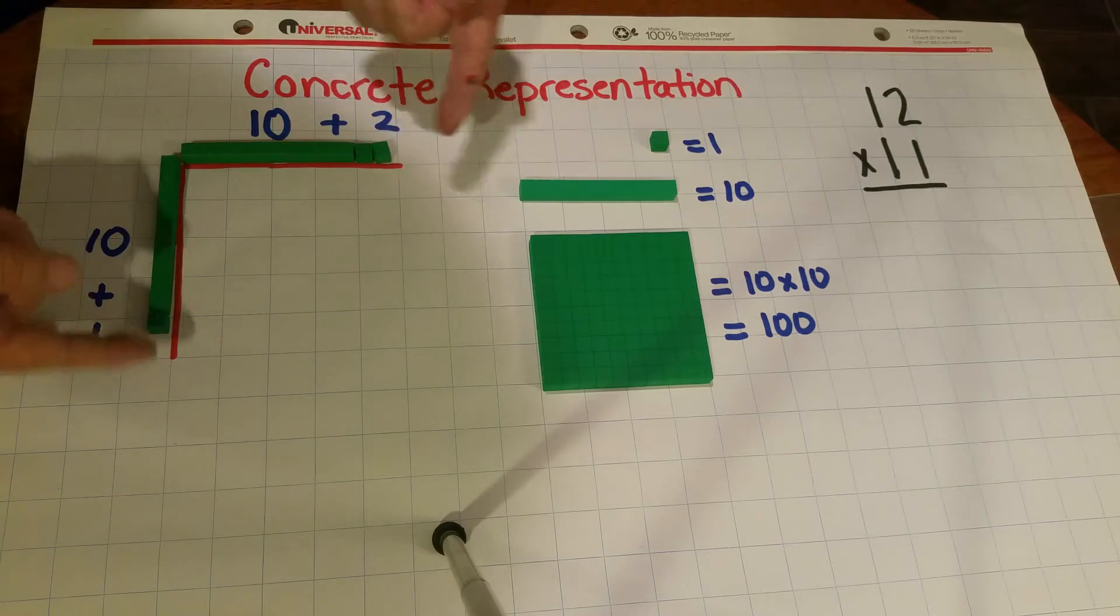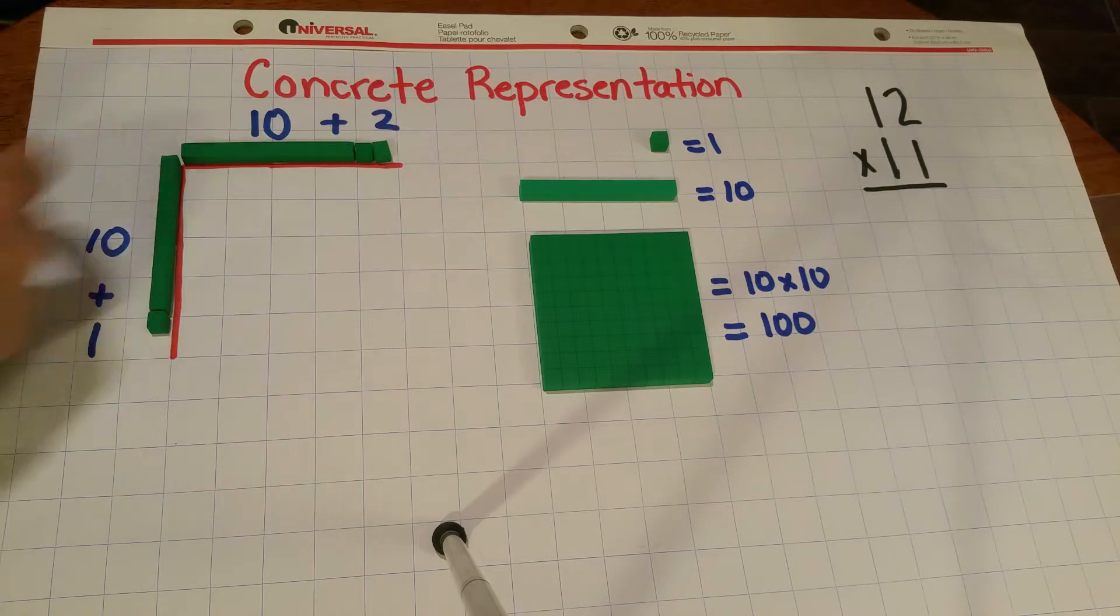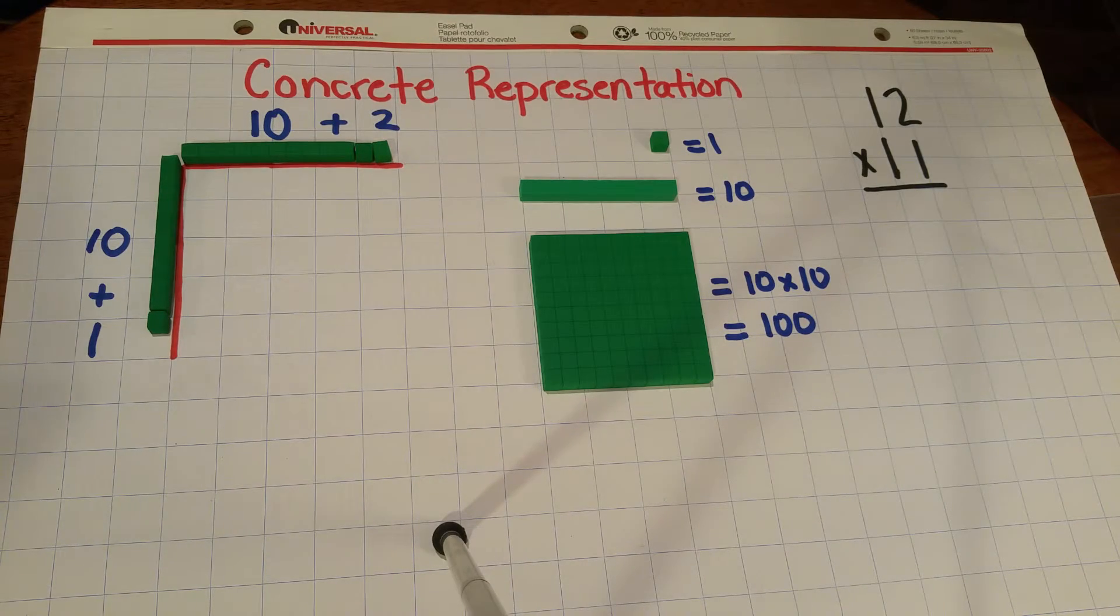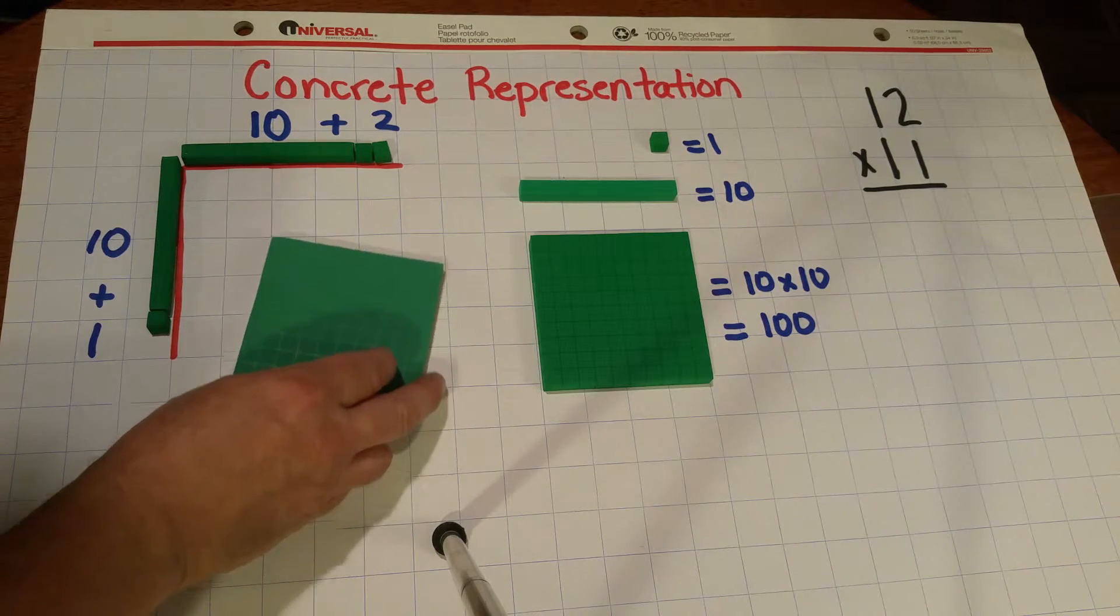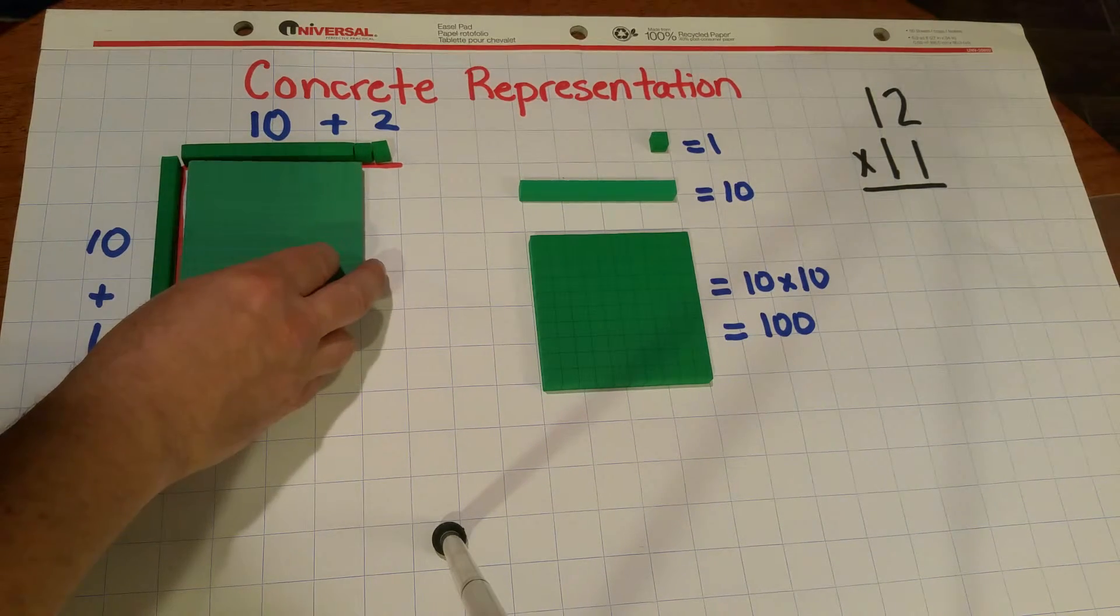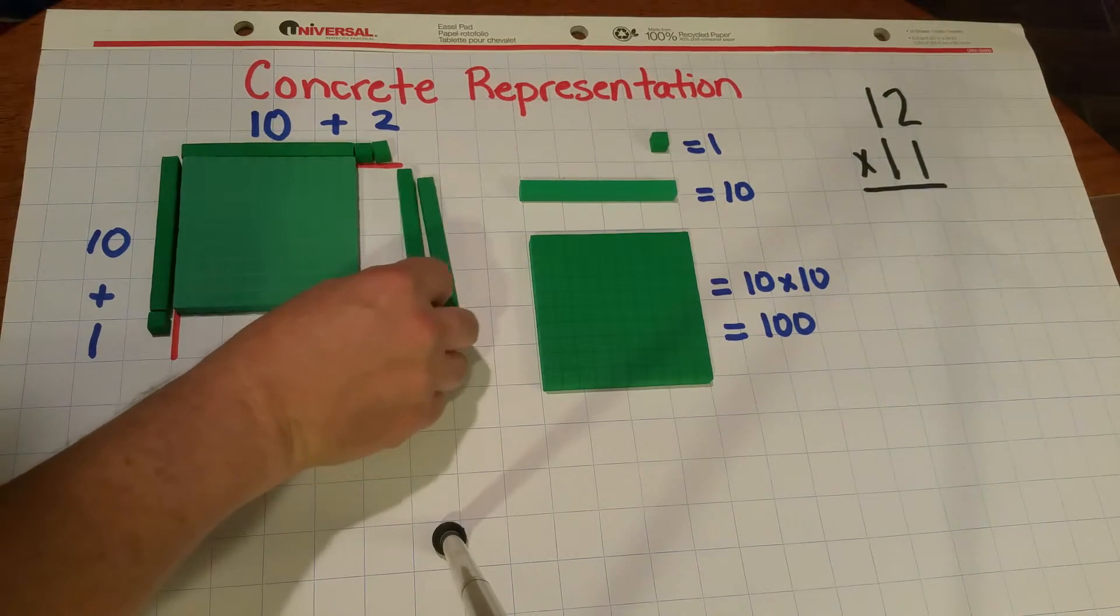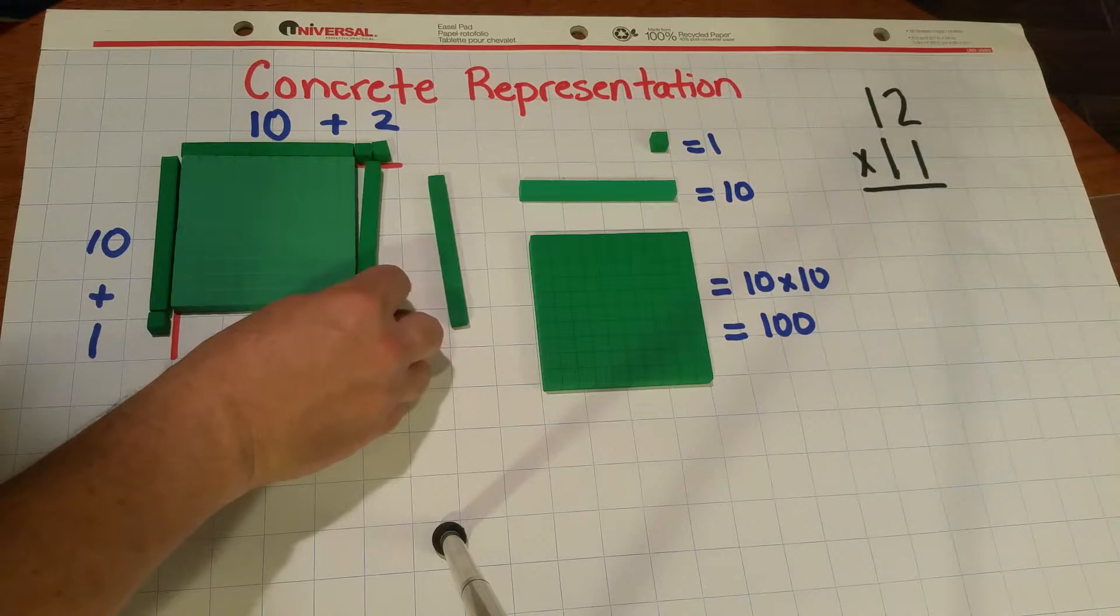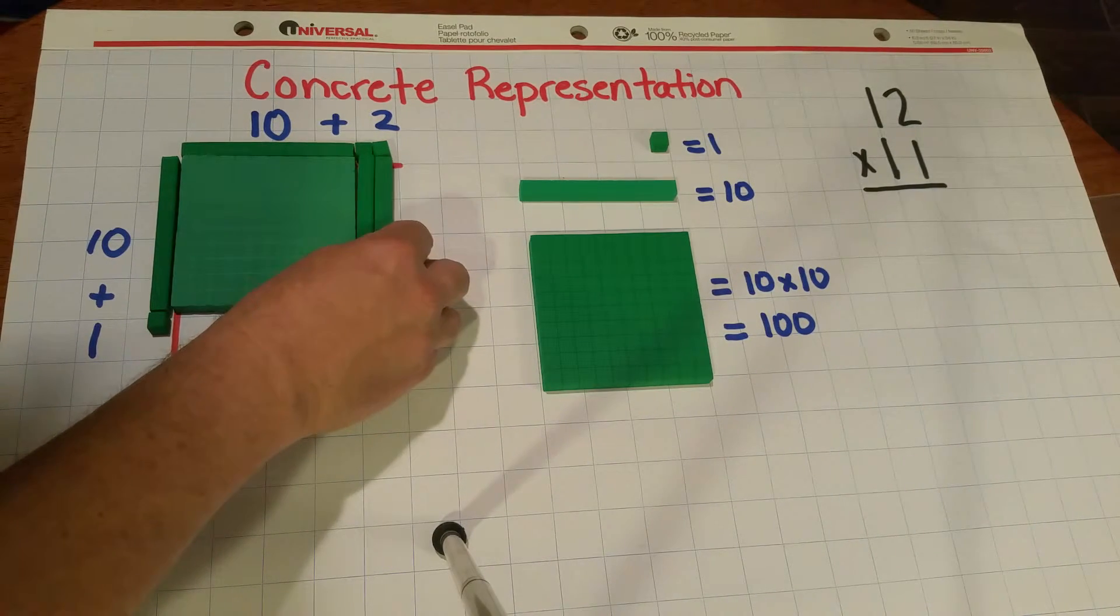So now we have on the outside a frame here: 11 and 12. And to build an array that is 12 by 11, I will fill in here is the 10 by 10 portion of the array, here is a 10 by 11 and 10 by 12.